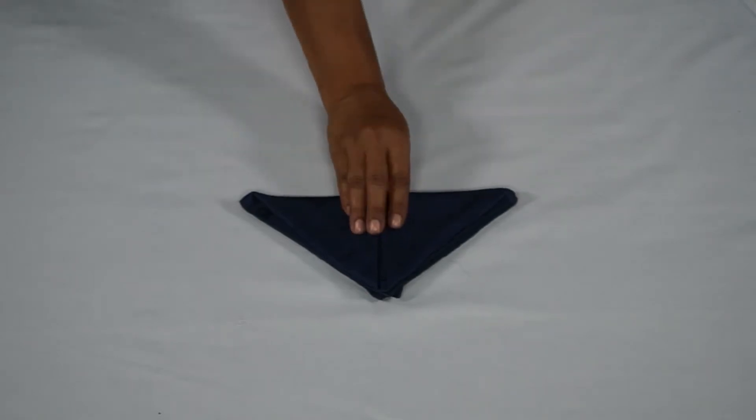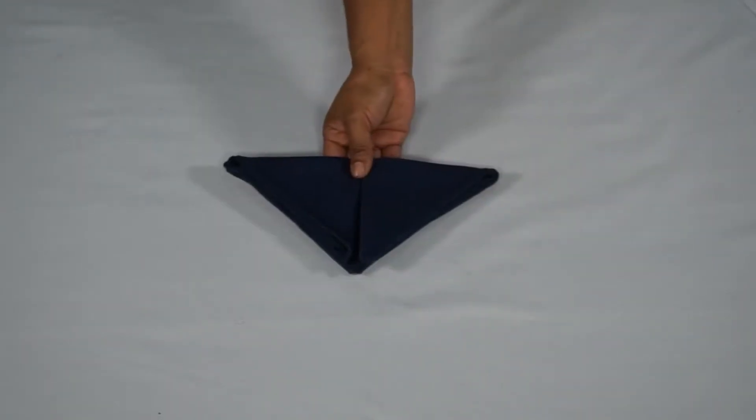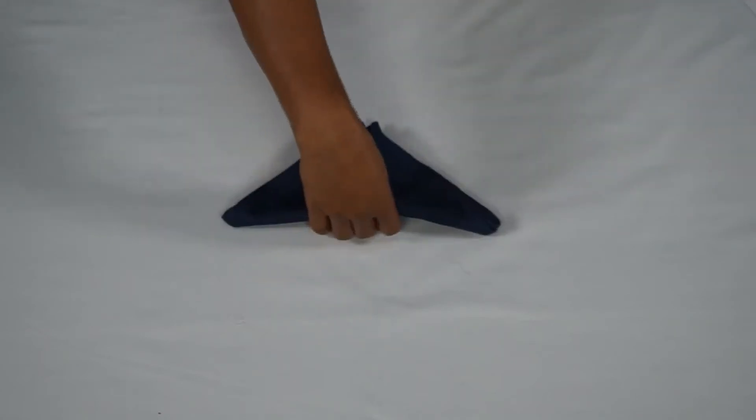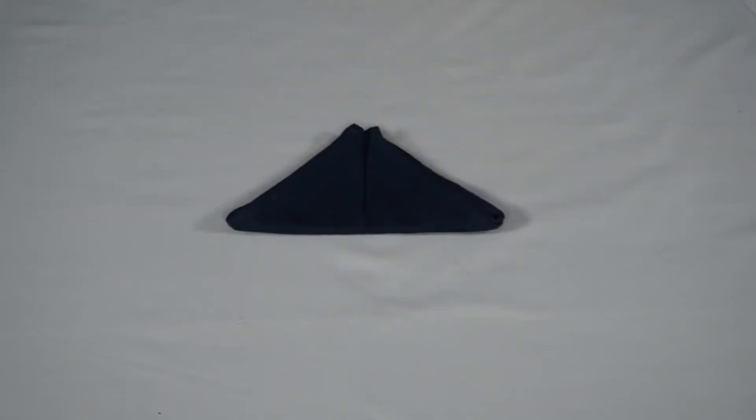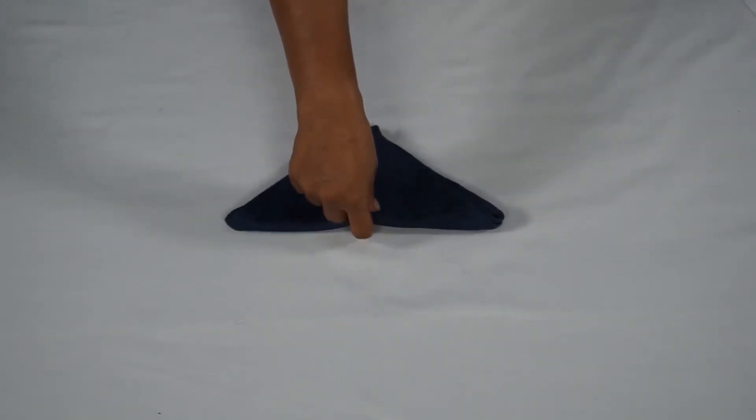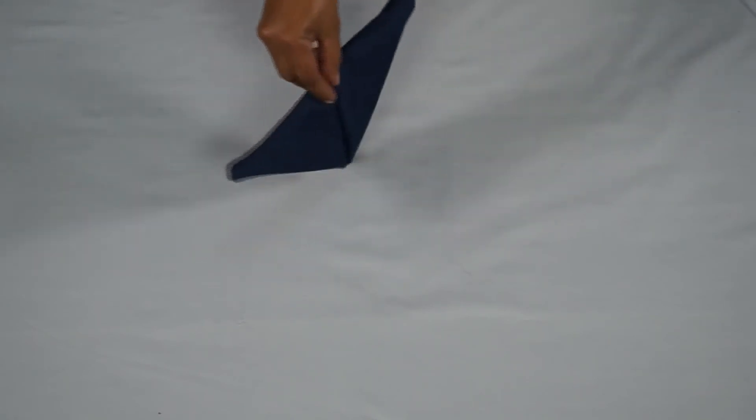Turn the napkin over, this time the open end should face towards you. Pick the napkin up along the center seam and stand it on the base of a triangle.